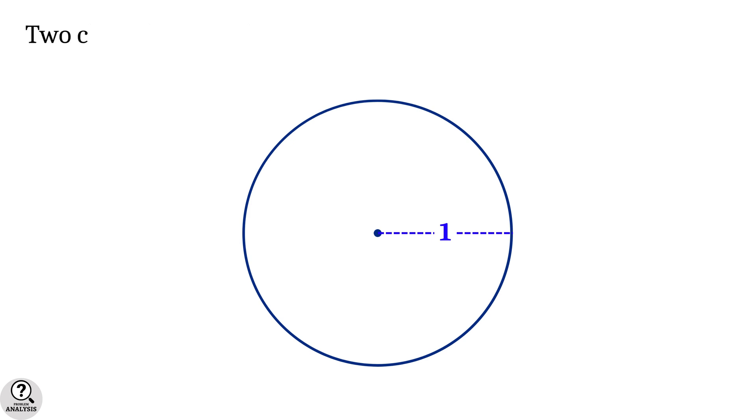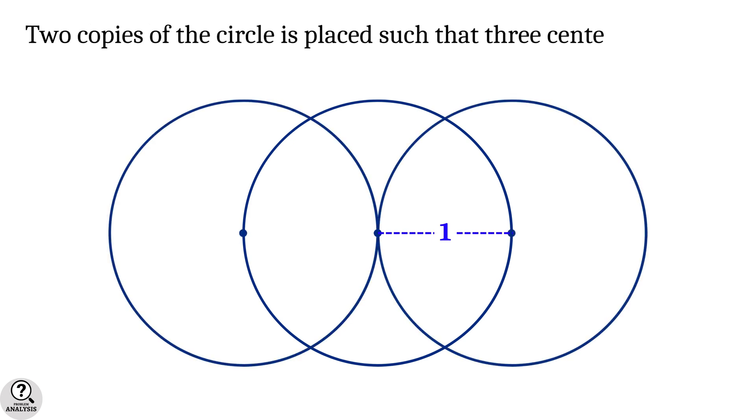Consider a unit circle. Two more copies of the circle are taken and placed in such a way that the centers of all the three circles are collinear, i.e. lying on the same line.